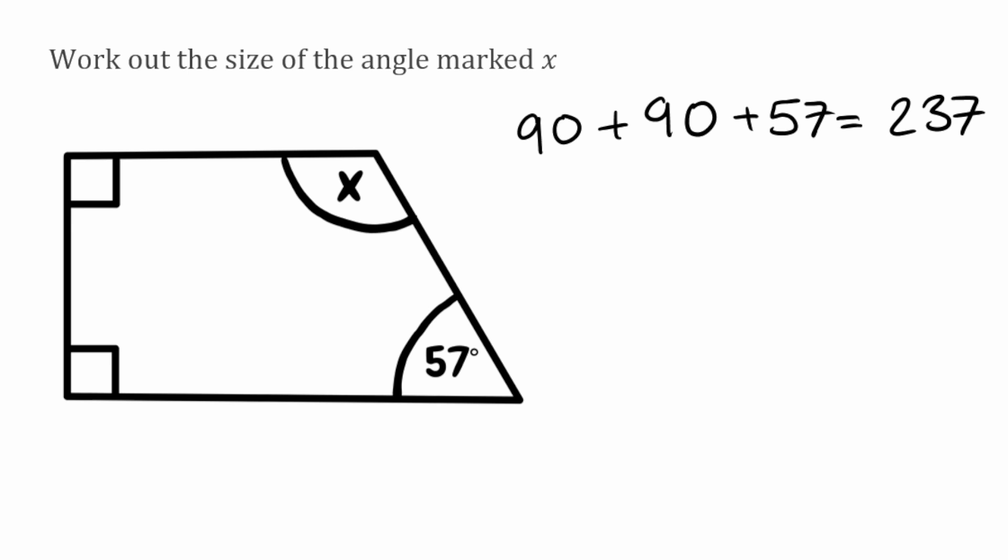So we know that our three angles that we've been given added together add up to 237, and because we know the angles in this quadrilateral will add up to 360 we're simply just going to take it away. So we do 360 take away 237 and that's going to give us 123. So our missing angle x here is 123 degrees.